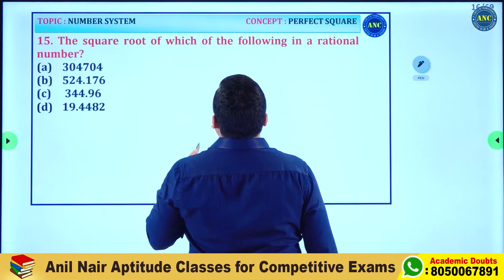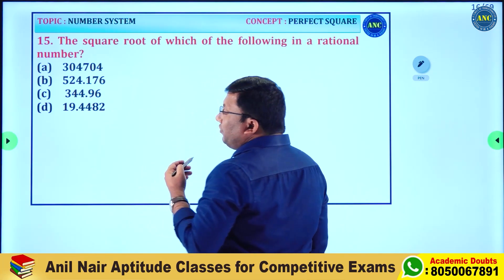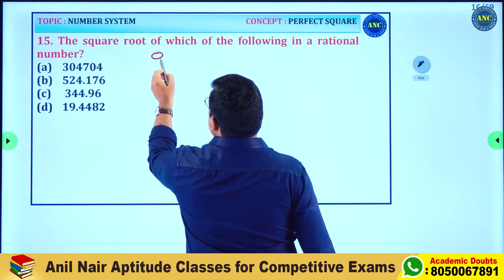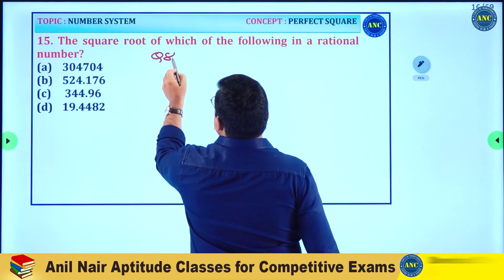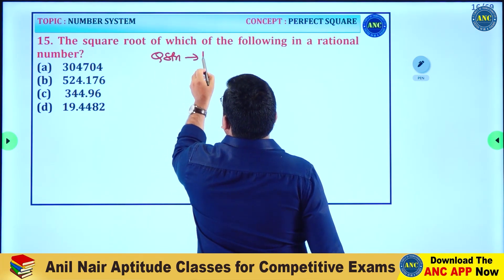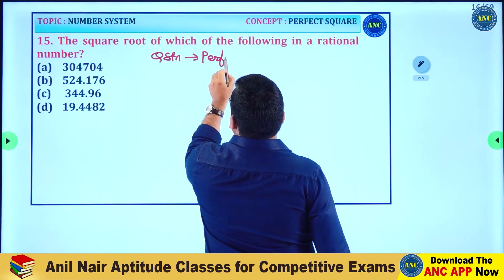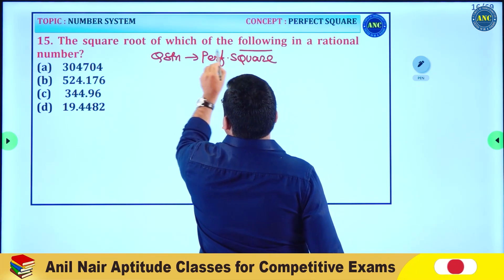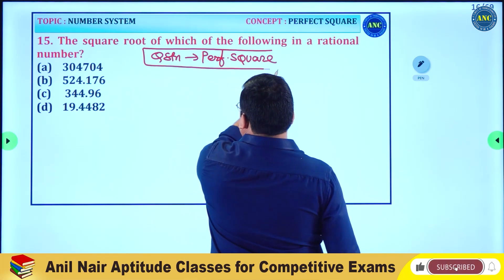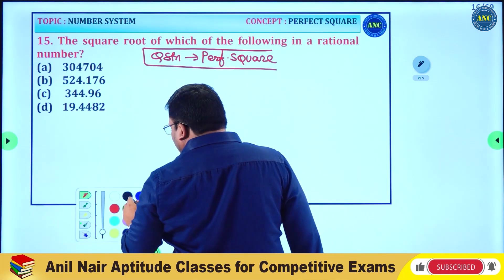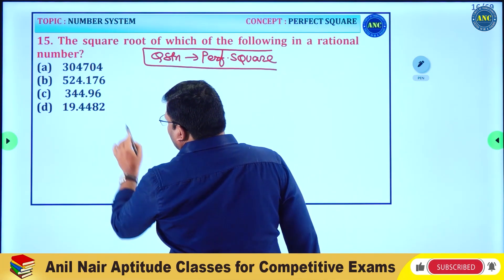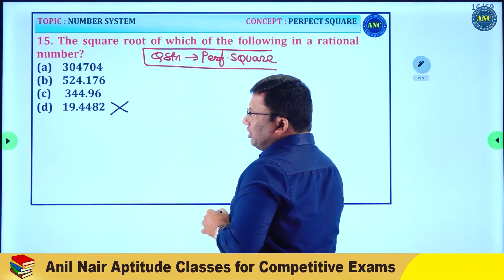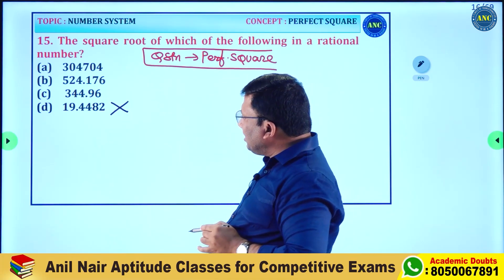One more question with the same idea: under the square root of which of the following will give a rational number? That means the number inside should be a perfect square. Use the properties of a perfect square to eliminate incorrect options. A perfect square never ends with 2, 3, 7, or 8 — one option ends with 2, so it is eliminated.